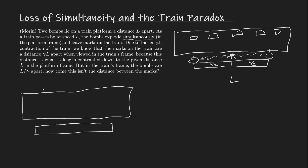Now let's consider this setup in the frame of the train. In the train's frame, the train is still and the platform is moving backward with speed v. The light source isn't moving, so it remains in place, but the bombs and the platform are moving. We use the postulate of relativity: light travels at the same speed c in all frames. So light travels with speed c to the left and speed c to the right.